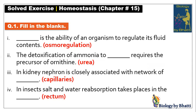The second fill in the blank: the detoxification of ammonia to dash requires the precursor of ornithine. Ammonia is a toxic form; urea is a less toxic form. In the urea cycle, when you convert ammonia to urea, the first ammonia is entered and combined with ornithine.